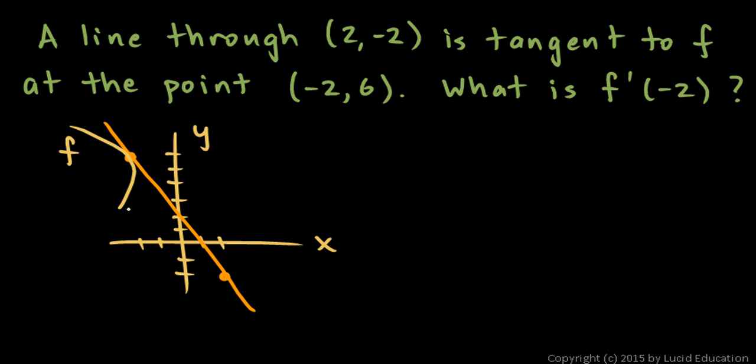Just draw in something that's basically tangent at that point. That curve is function f, and it's tangent right there. So that means that the slope of that line is the slope of the function at that point, and that's what we're looking for, the slope at that point.